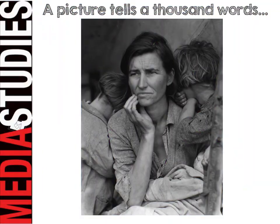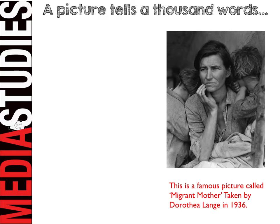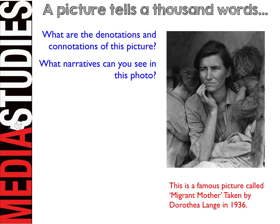Let's continue with the theme of a picture tells a thousand words and do some image analysis. This is a very famous picture — an image called Migrant Mother taken by photographer Dorothea Lange in 1936. Before we get into what it's about, take a moment to think about your own response to the image itself. We analyse using connotations and denotations — what's there and what's implied by those things. What narratives can you see? What story have you come up with for this particular photograph?